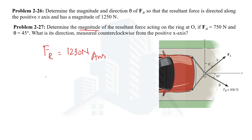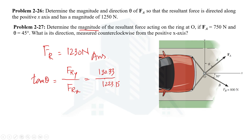The direction can be calculated using the formula: tan(θ) = FRy / FRx, the vertical component divided by the horizontal component of the resultant force. Substituting the values of FRy and FRx, and taking the inverse tangent, we get the direction of the resultant force as 6.02 degrees. This completes the calculation of both the magnitude and direction of the resultant force using the composition of forces method.